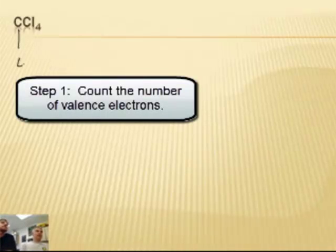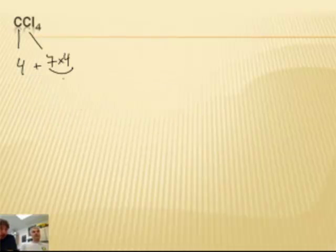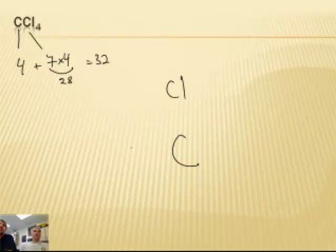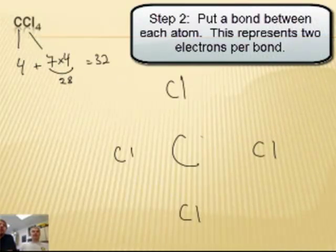So carbon gets 4, and chlorine gets 7 times 4. 7 times 4 is 28, and 4 is 32. So the central atom would be carbon. I'm going to put my 4 chlorines on the outside. What's the first step? Draw a bond between them all. 2, 4, 6, 8.